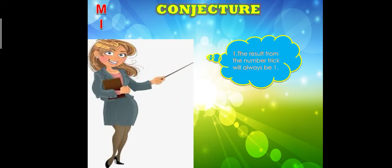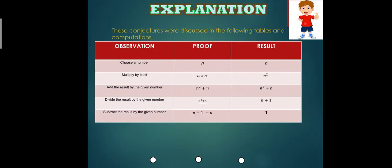Our conjecture: The result from the number trick will always be 1. We have here our observation, proof, and result.